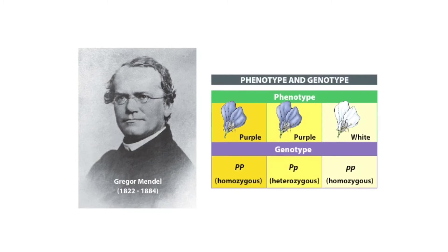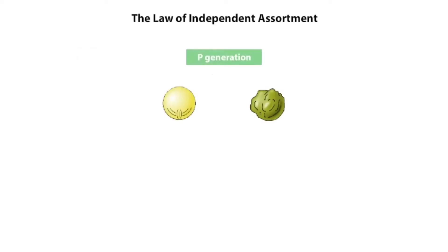Mendel's laws of inheritance help us predict the phenotypes of offspring from the genotypes of the parents. One of Mendel's laws, the law of independent assortment, was based on two-trait breeding experiments, crosses in which he tracked two completely different traits at the same time.